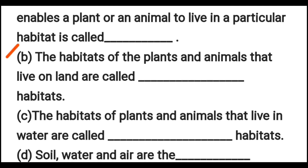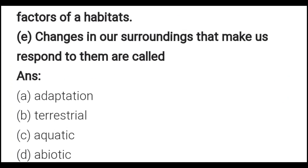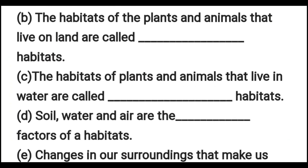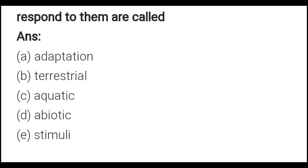Part B: The habitats of plants and animals that live on land are called blank habitats — write: terrestrial. Part C: The habitats of plants and animals that live in water are called blank habitats — write: aquatic.